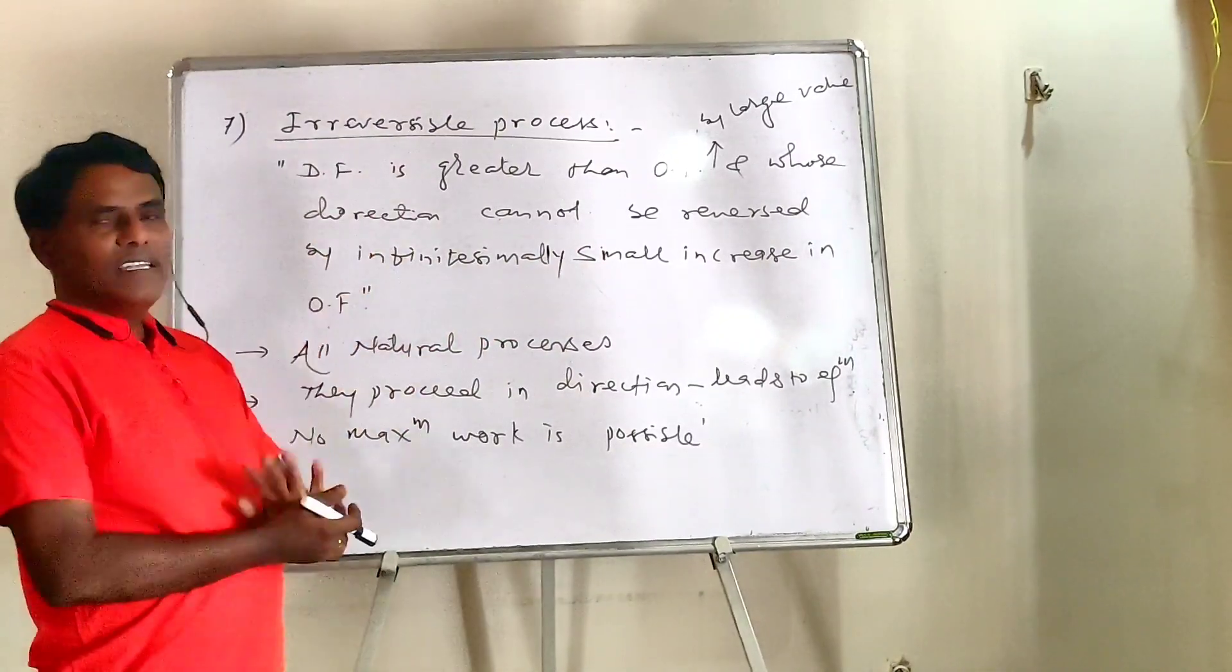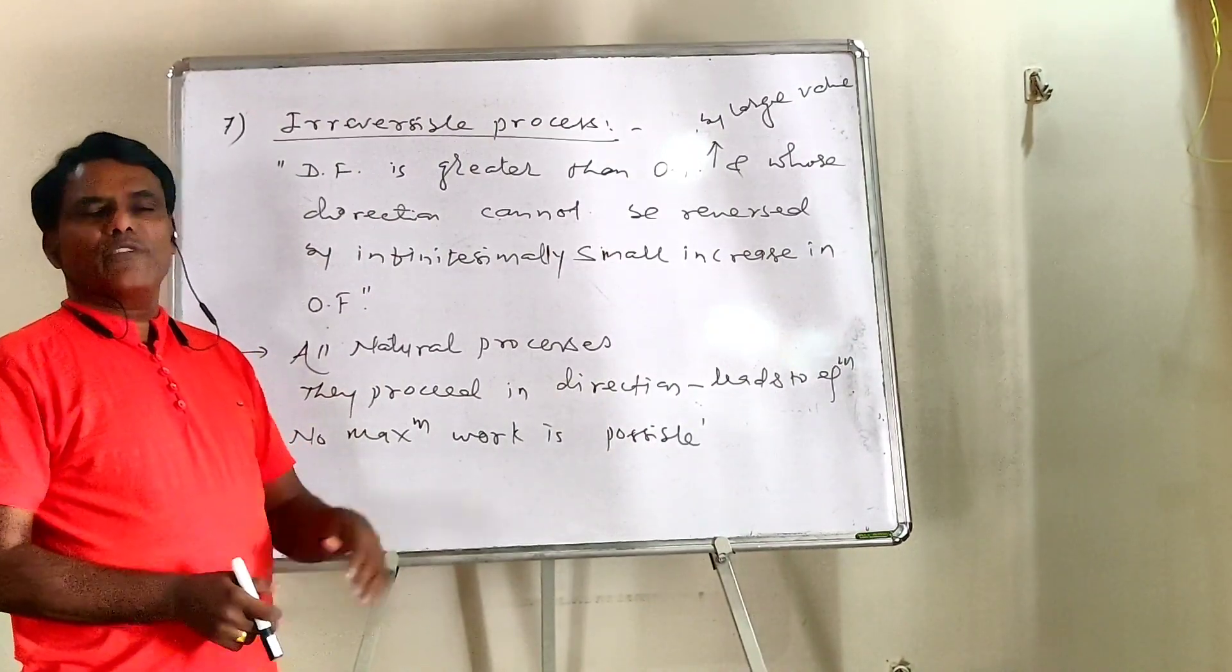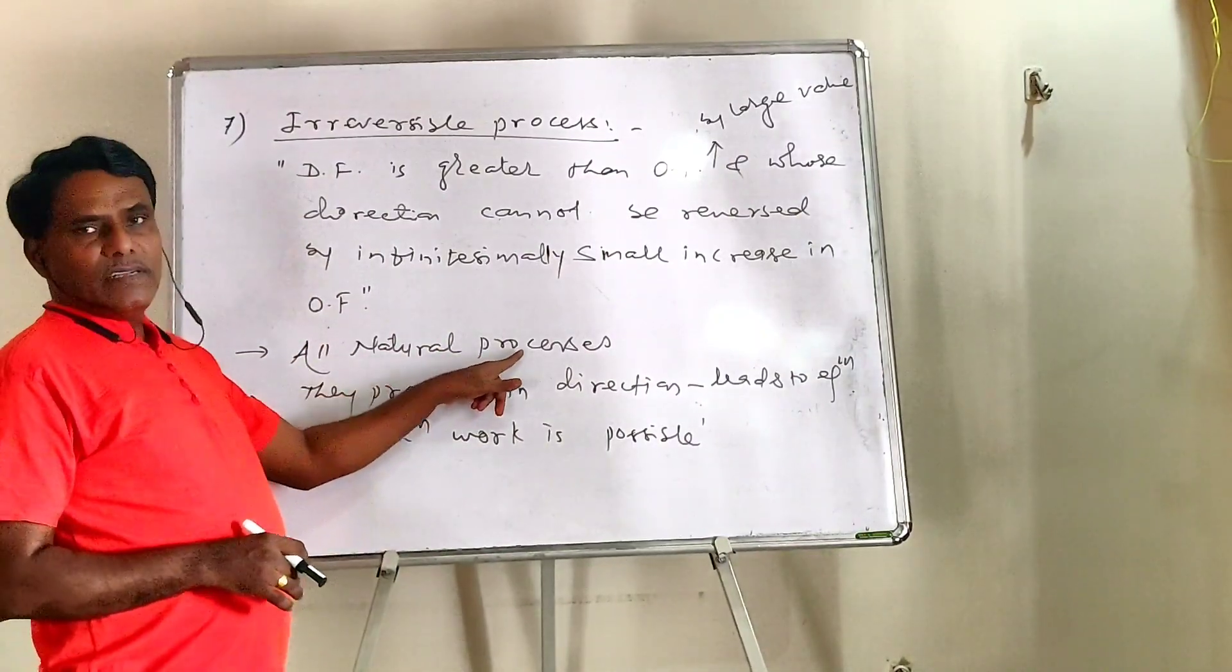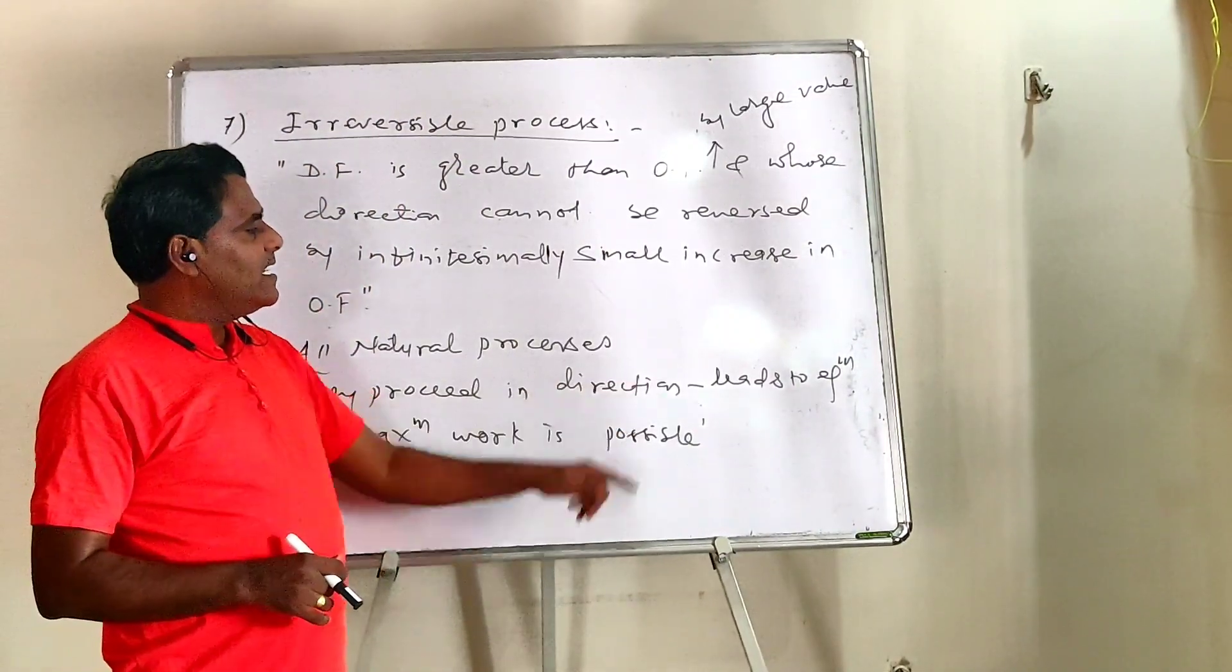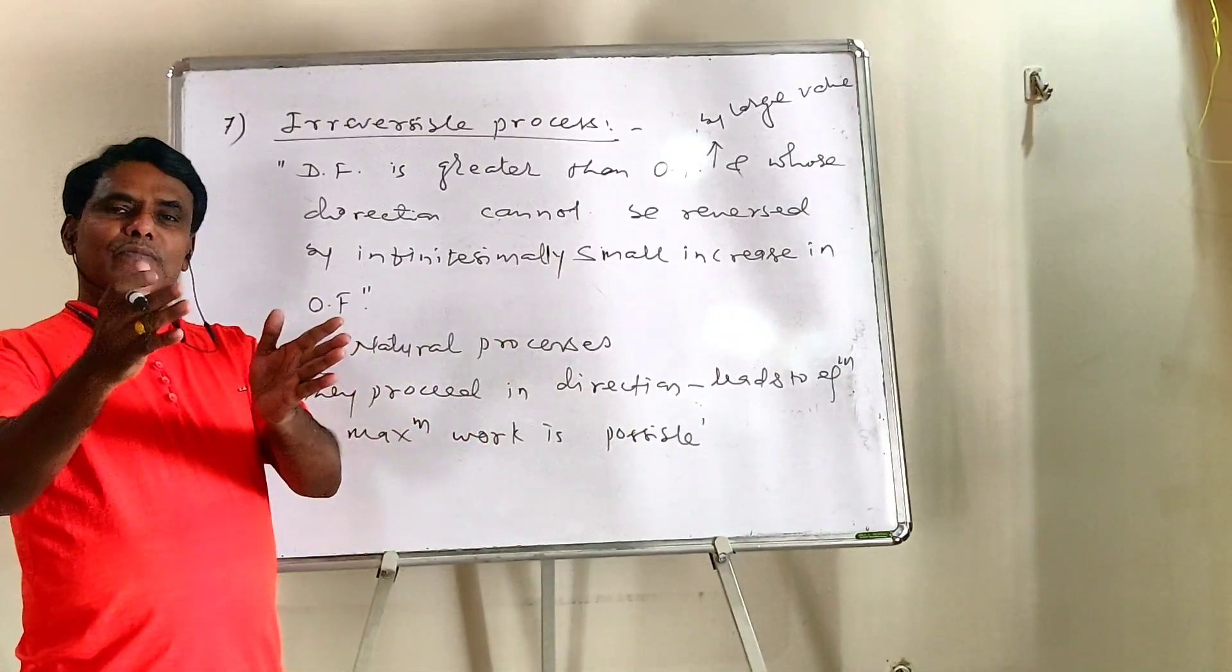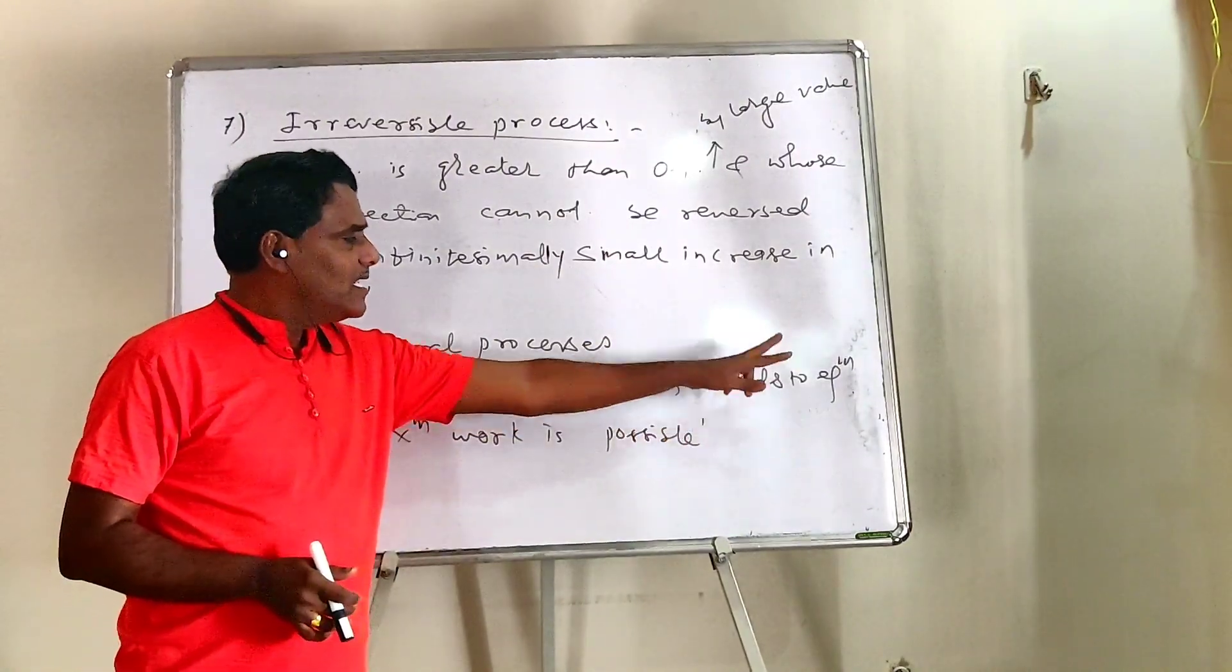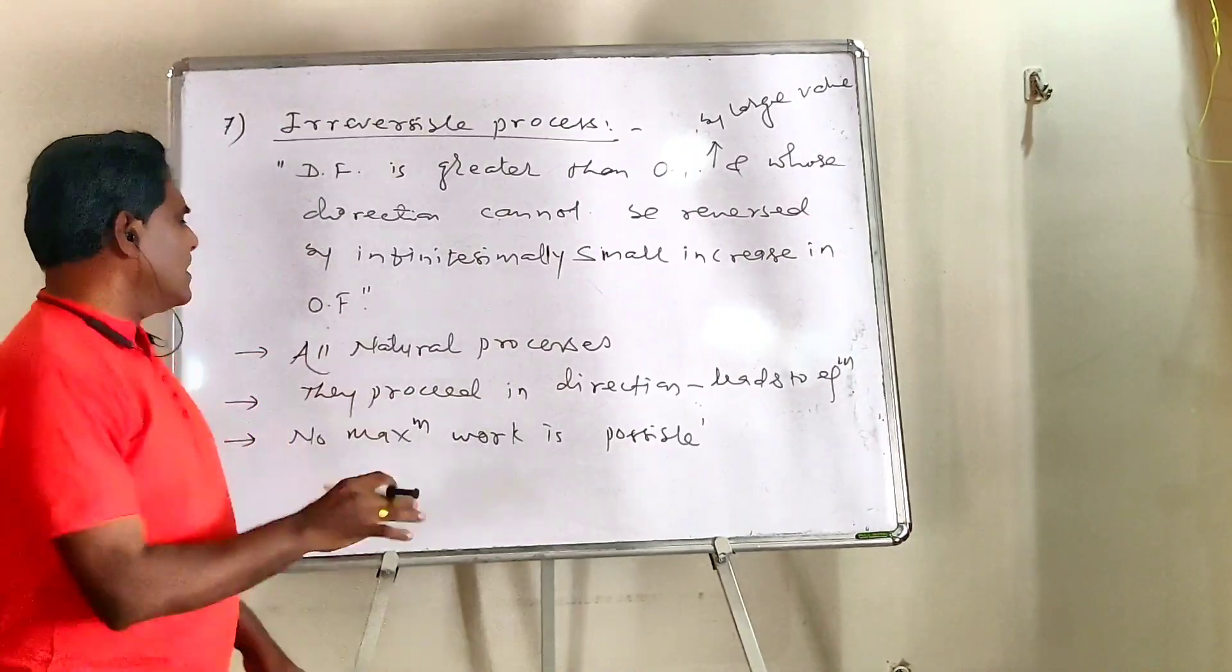All natural processes, they are irreversible processes, such as fall of water from higher level to lower level, flow of current from higher potential to lower potential, flow of heat from high temperature to low temperature. So all these natural phenomena are irreversible type of processes. These processes proceed in a direction which leads to equilibrium.